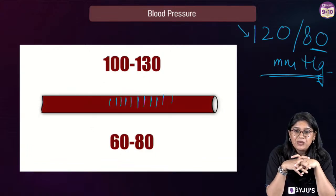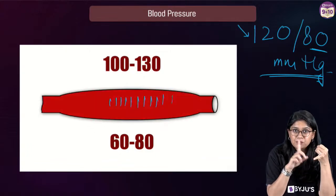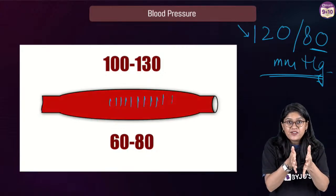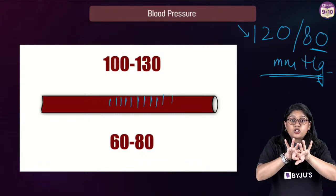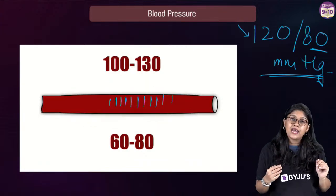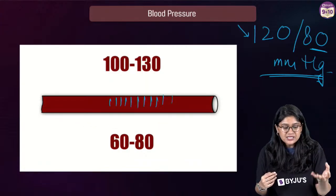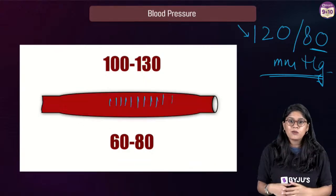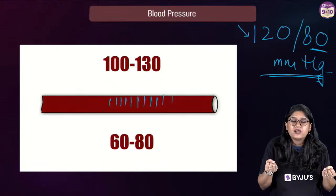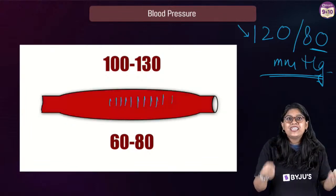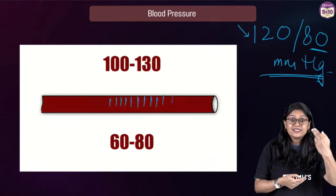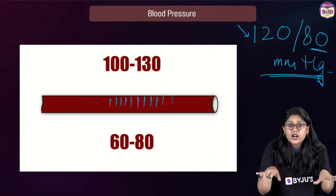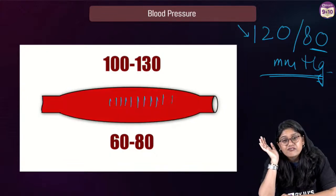High BP means the blood pressure is really very high — more blood in the blood vessels, putting pressure on the vessels. Low blood pressure means there's less blood and it's not moving fast, so the body cannot receive blood. We need oxygen and nutrients that circulate with blood. If that's not happening, we'll feel very lethargic, very lazy, we'll have fatigue.